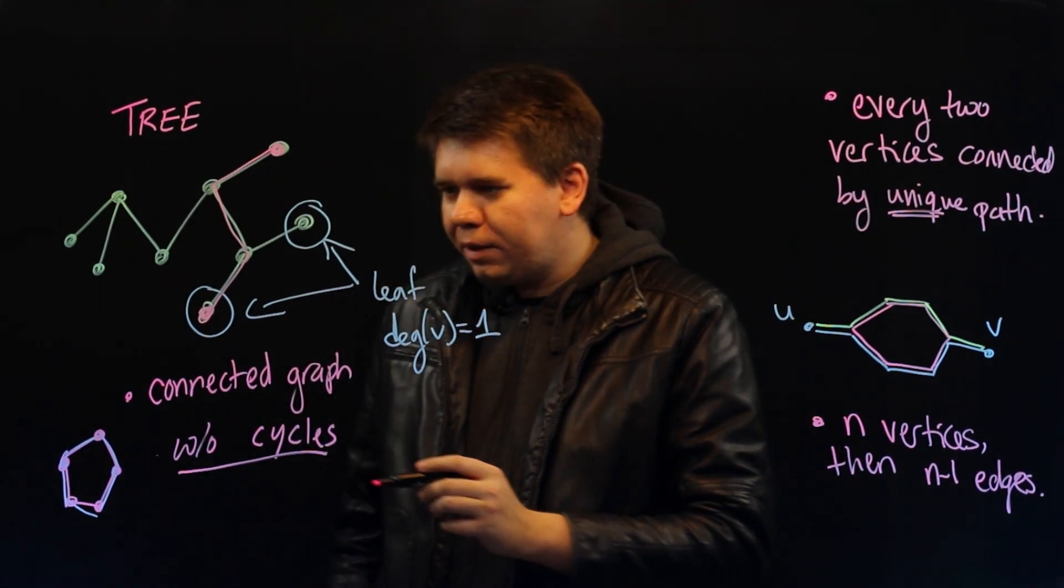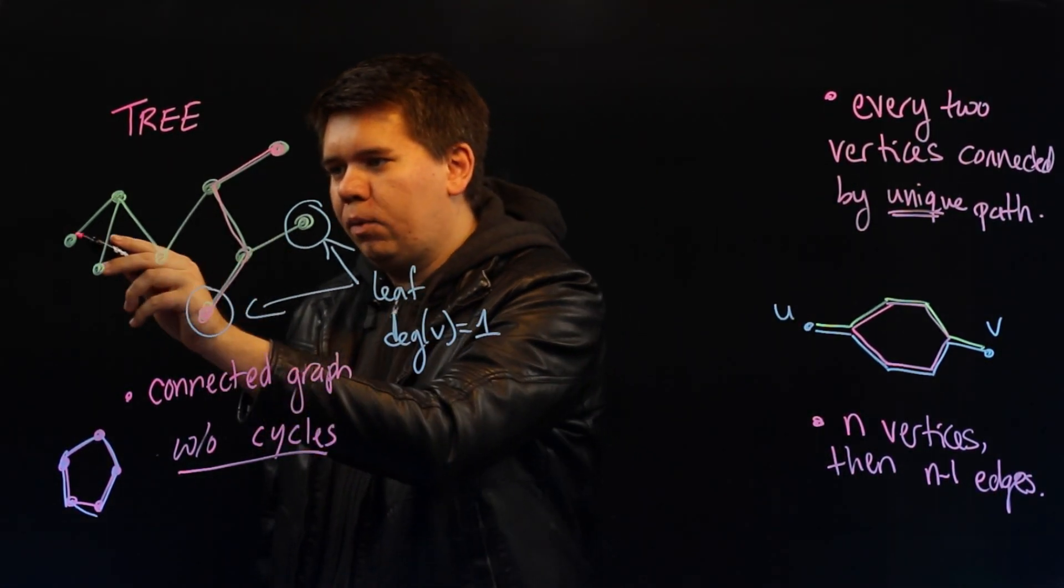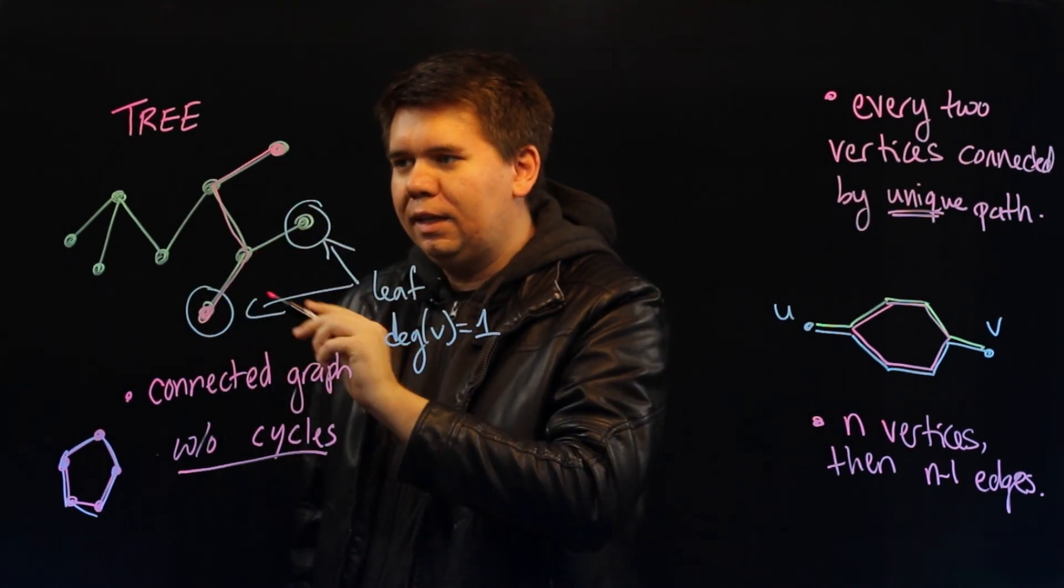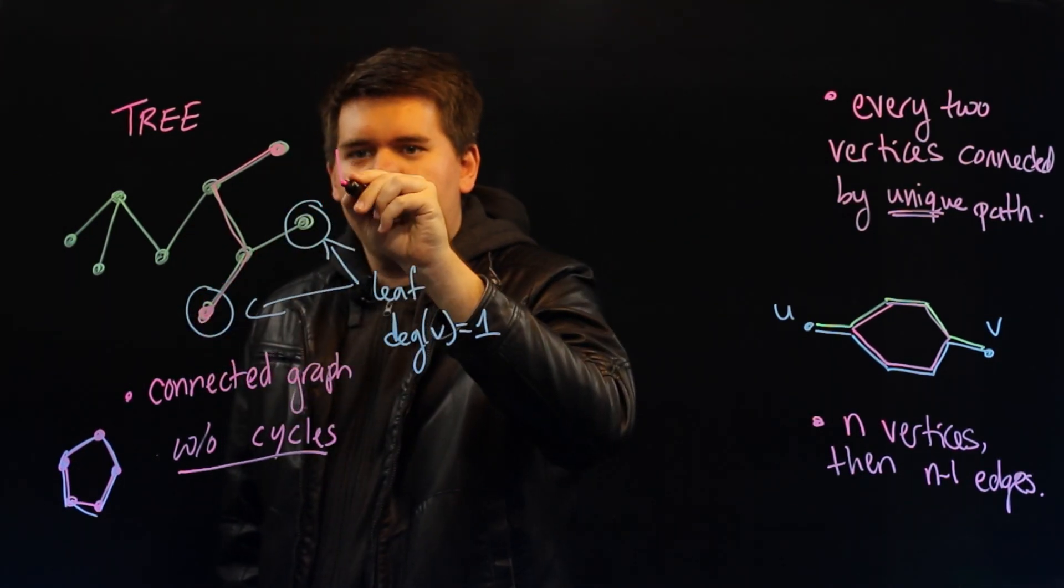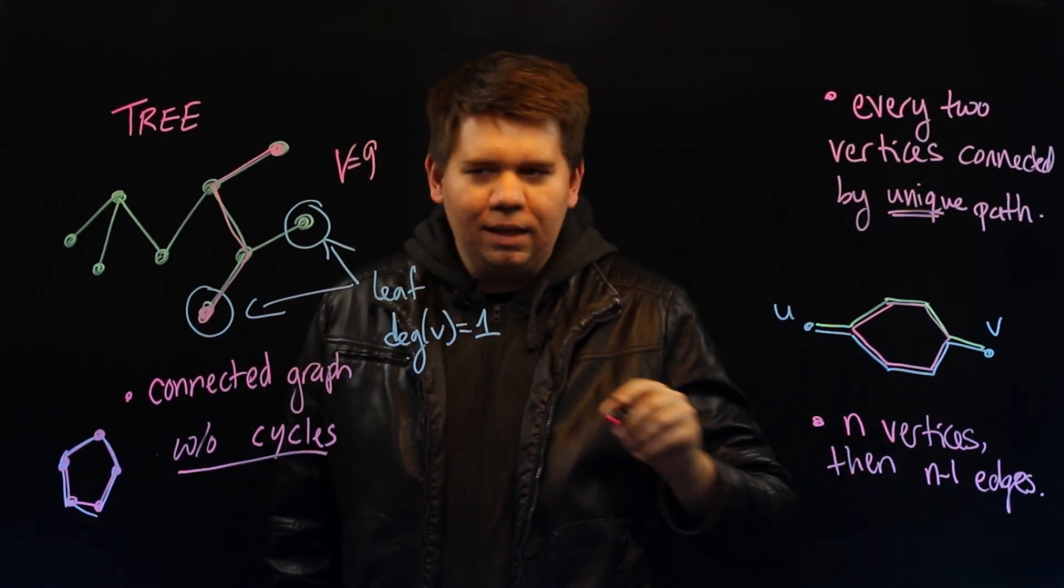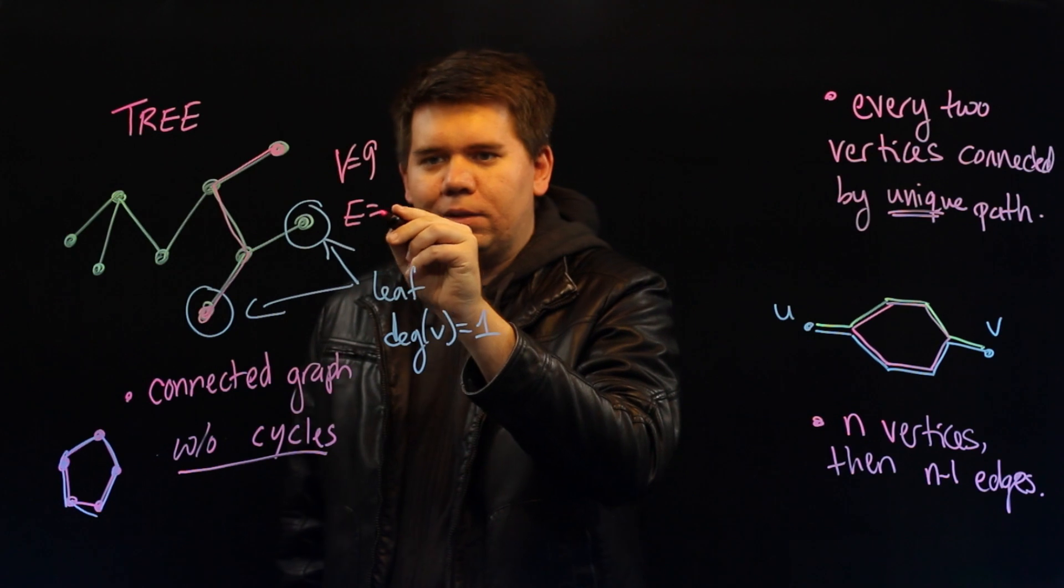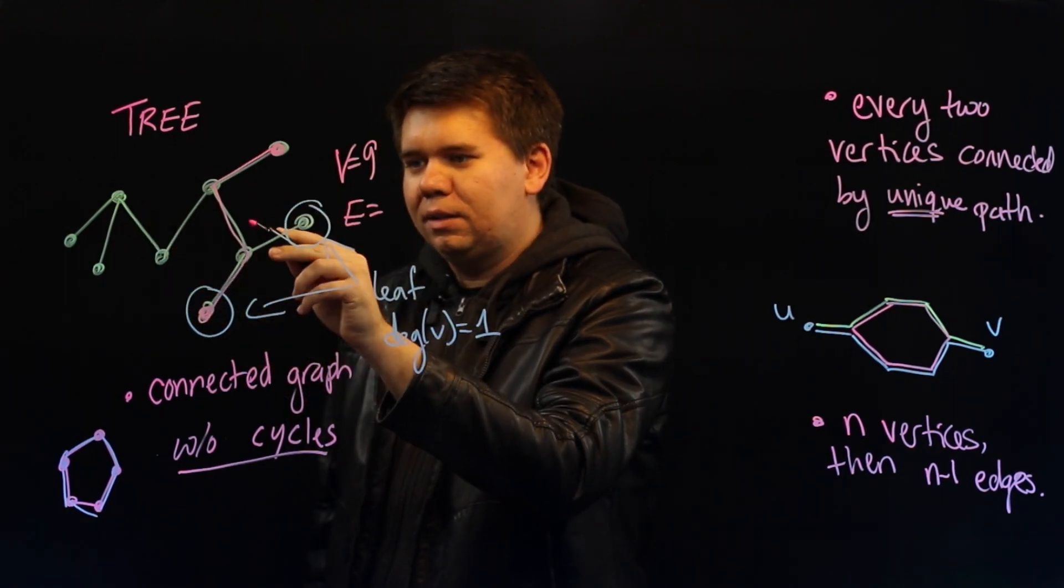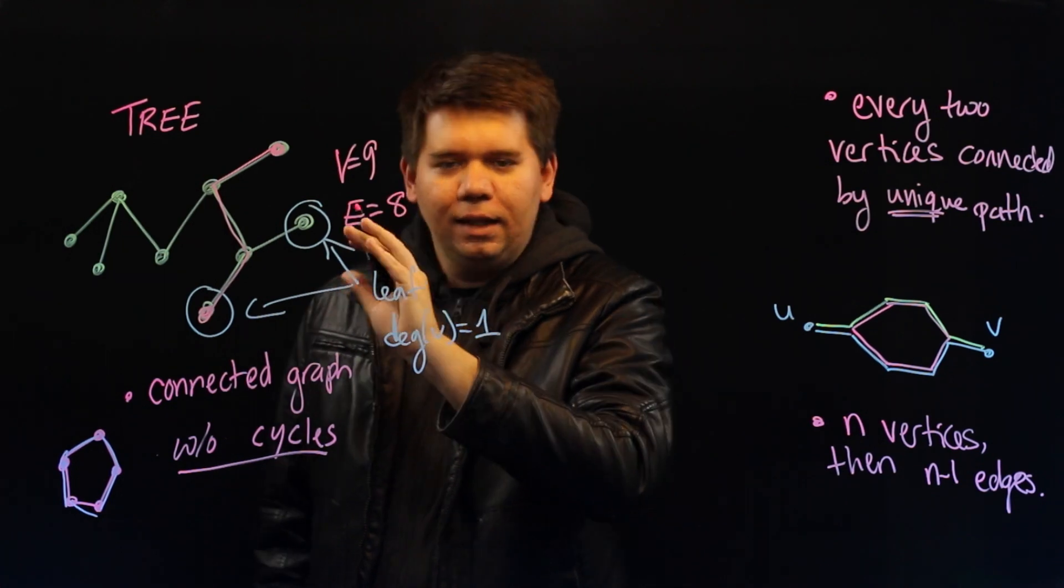So we might check this really quick. In this particular tree, there are 1, 2, 3, 4, 5, 6, 7, 8, 9 vertices. Our number of vertices is 9. So we should expect there to be 8 edges. And let's check. There's 1, 2, 3, 4, 5, 6, 7, 8. 8 edges.